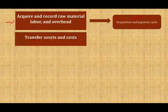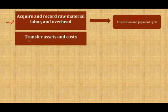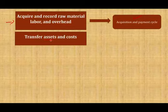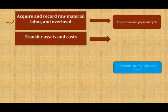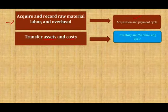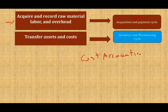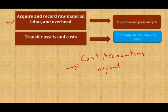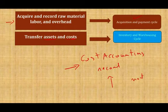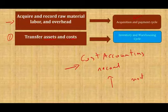After we buy the material, we transfer it from raw material into production — this is the second part of the audit. We transfer assets and costs within the company, from the storeroom to production. In this inventory and warehousing cycle, the client — our auditee — accounts for these activities in something called the cost accounting record. We need to examine this cost accounting record in detail and understand the proper internal controls for it. This is where we start doing inventory auditing, accounting for internal transfers within the company through the cost accounting record.